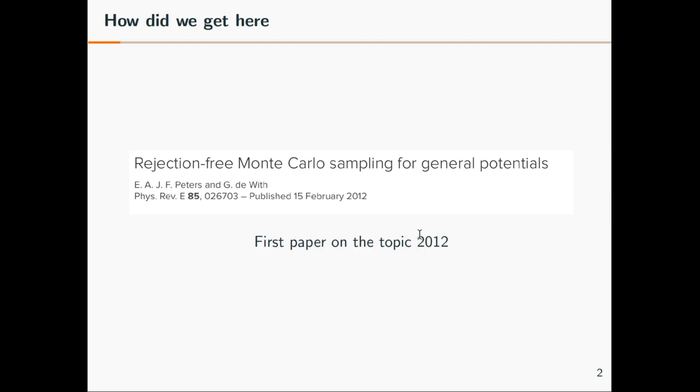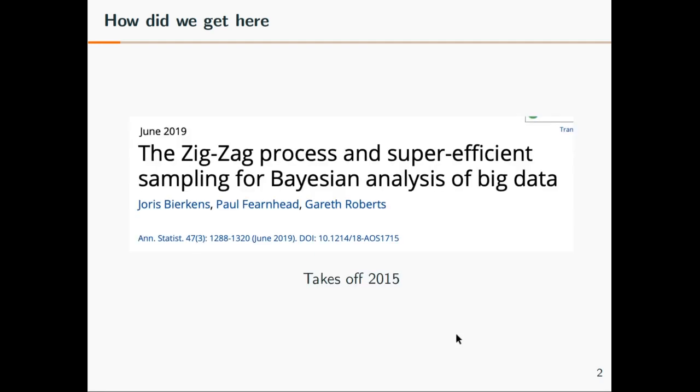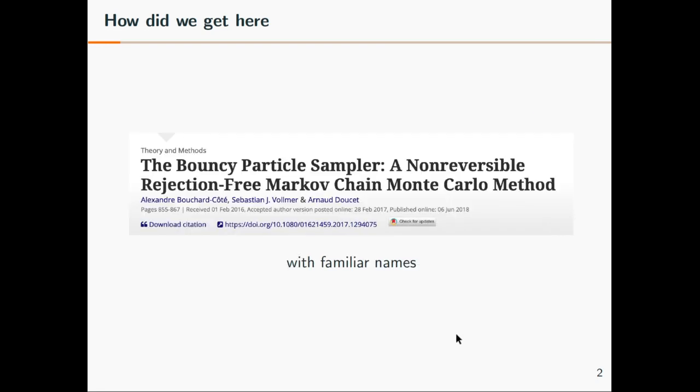Started by two Dutch scientists in Eindhoven with their paper Rejection-Free Monte Carlo Sampling for General Potentials. Rejection-free refers to what you saw on the previous slide: the particle never stands still. The first paper on the topic was 2012, about the starting of Julia, and then a bit later it took off in Great Britain. Here the zigzag process, we've already seen a sample of it. The second paper, Bouncy particle sampler, is very similar to the zigzag.